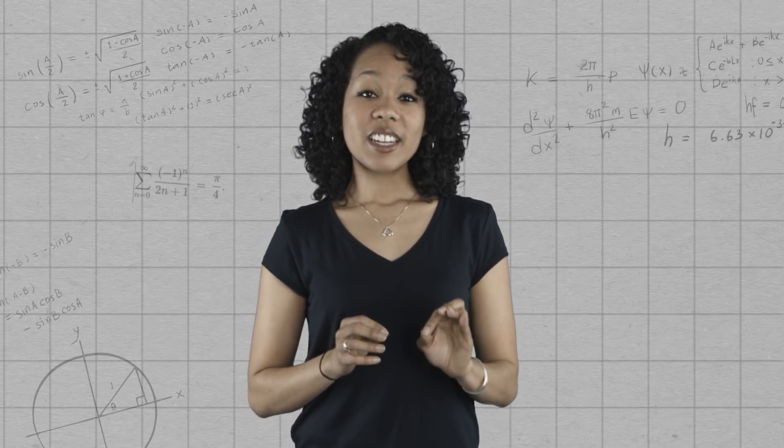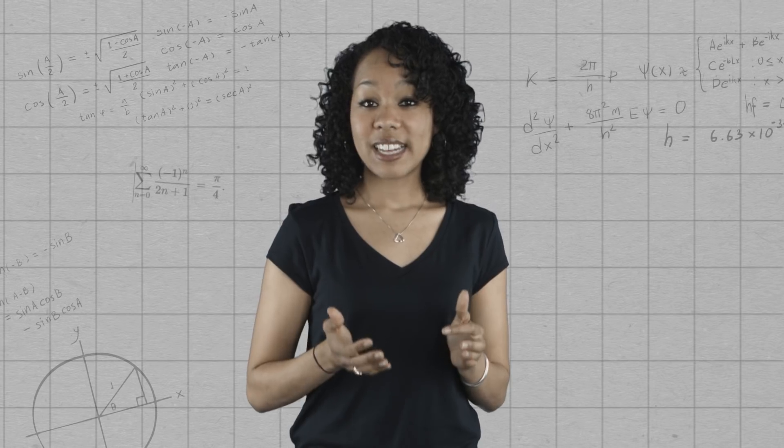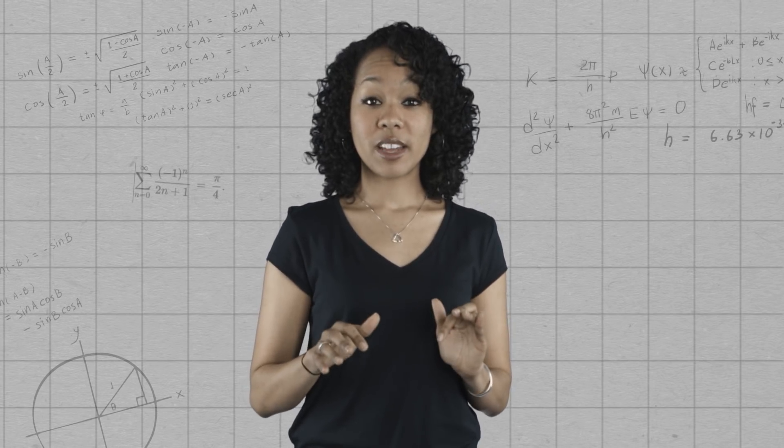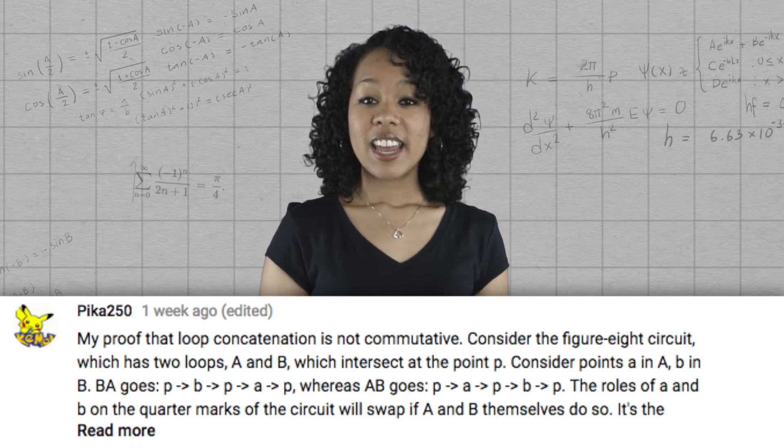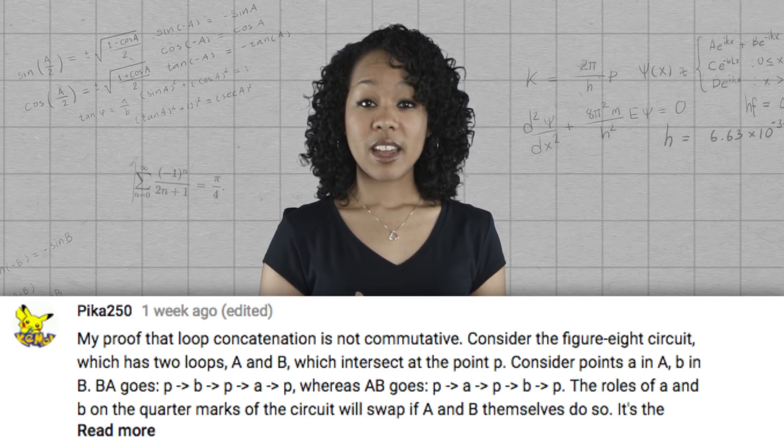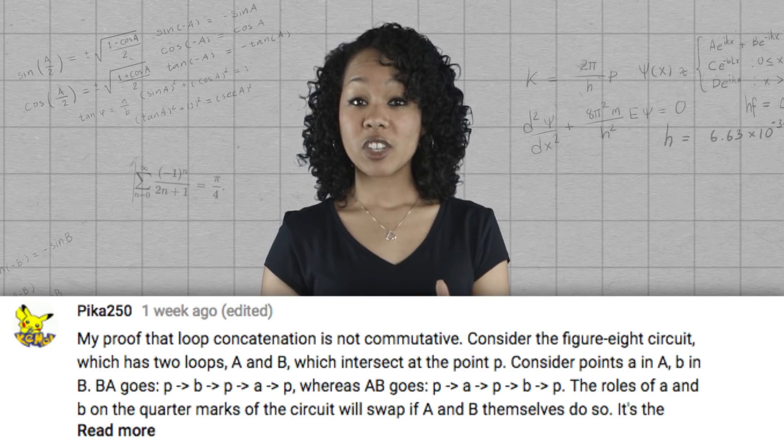All right. Next up, at the end of the episode, I asked you to ponder why loop concatenation is not commutative. Several of you, like Pika250, had the right idea. In the product A times B, the red car starts driving around its loop first, then the blue car goes.